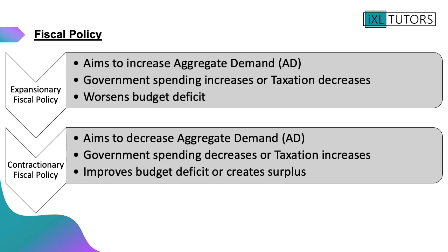Expansionary fiscal policy aims to increase aggregate demand through an increase in government spending or a decrease in taxation. However, increases in spending or decreases in tax cause a worsening budget deficit for the government. Contractionary fiscal policy, on the other hand, aims to decrease aggregate demand — the government would decrease spending or increase taxation, and that will aim to improve the budget deficit or create a surplus for the government.